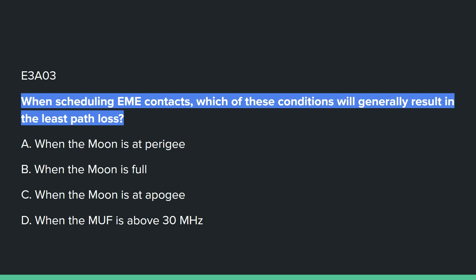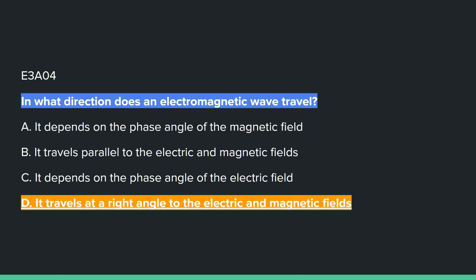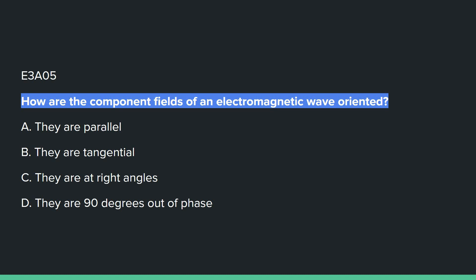E3A03: When scheduling EME contacts, which of these conditions will generally result in the least path loss? A: when the moon is at full perigee. E3A04: In what direction does an electromagnetic wave travel? Answer is D: it travels at a right angle to the electric and magnetic fields. E3A05: How are the component fields of an electromagnetic wave oriented? It is C: they are at right angles.